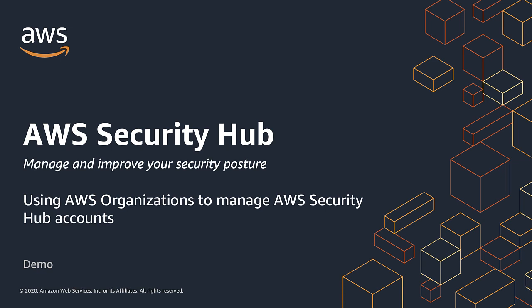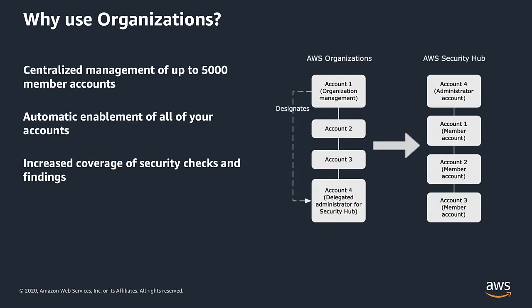AWS Security Hub gives you a prioritized view of your security alerts and security posture across your AWS accounts. With Security Hub, you now have a single place that aggregates, organizes, and prioritizes your security alerts, or findings, for multiple AWS services as well as from AWS partner solutions.